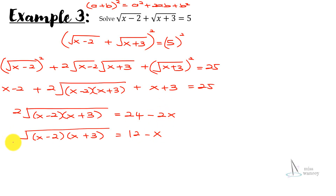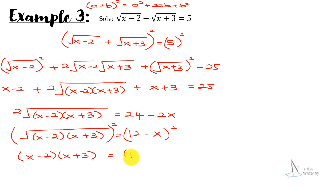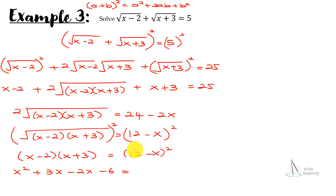To remove the remaining square root, square both sides again. The square root squared cancels, giving (x−2)(x+3) equal to (12−x)². Expanding both sides: x² + x − 6 equals 144 − 24x + x². The x² terms cancel out.